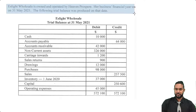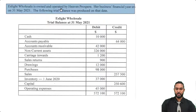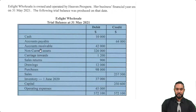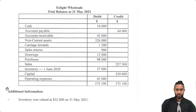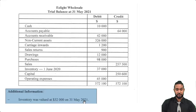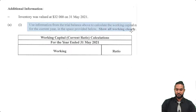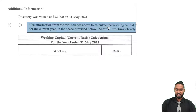Let's start by taking a read of the information. S-Lite Wholesale is owned and operated by Heaven Prosper. Her business's financial year ends on 31st May 2021. The following trial balance was produced on that date. We have usual items and some additional information. Inventory was valued at $32,000 on 31st May 2021 — that's the closing inventory. The question asks us to use the information from the trial balance to calculate the working capital ratio for the current year, showing all working clearly.